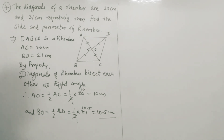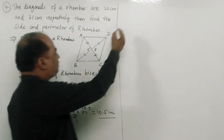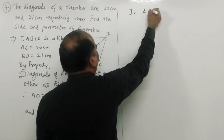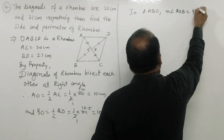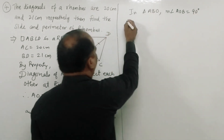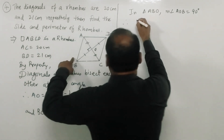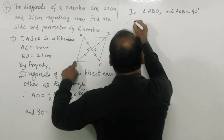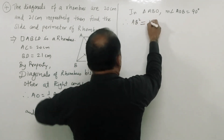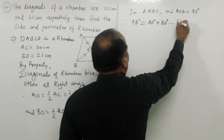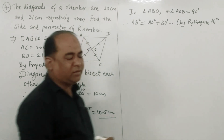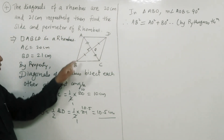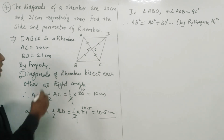Now in triangle ABO, angle AOB is equal to 90 degrees since diagonals bisect each other at right angle. Therefore by Pythagoras theorem, AB square is equal to AO square plus BO square. Since triangle AOB is a right angle triangle, we can apply the Pythagoras theorem to find side AB.